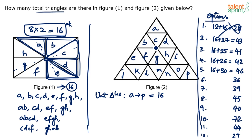When counting four-unit triangles, go in a flow — don't randomly count. If you jump around — A, B, C, D then suddenly G, L, M, N then I, N, O, P — you'll get lost. Go step by step, either top to bottom or left to right, so you don't miss anything.